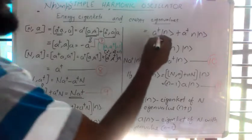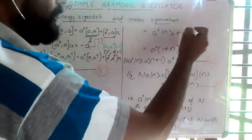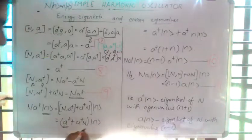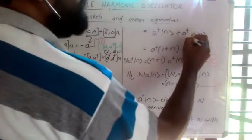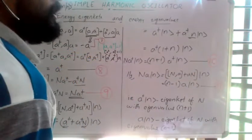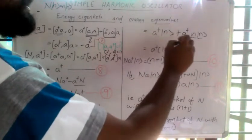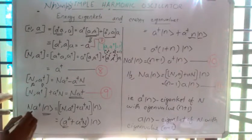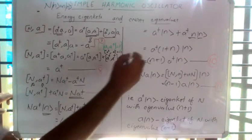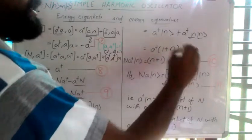So N a dagger on |n⟩ equals, using equation nine, that is N a dagger plus a dagger N operating on |n⟩. From equation eight, the commutator of N and a dagger equals a dagger, so this expands to a dagger·n|n⟩ plus a dagger|n⟩, which we can write as a dagger times (1 + n) times |n⟩. Therefore N a dagger operating on |n⟩ equals (n+1) a dagger |n⟩.